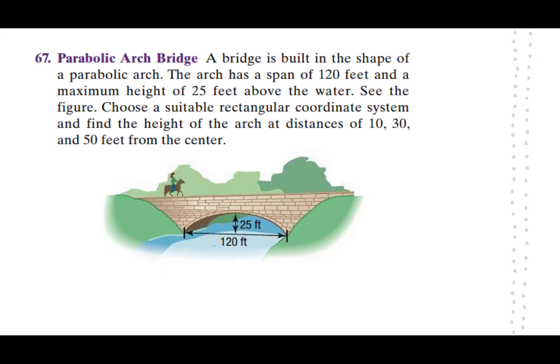Here's the long problem. I'm pretty sure I didn't give you this in the homework, but I have a plan to make this a quiz instead. That way you could show me some work and do some stuff on Desmos. So it says a bridge is built in the shape of a parabolic arch. The arch has a span of 120 feet and a maximum height of 25 feet above the water. See the figure. Choose a suitable rectangular coordinate system and find the height of the arch at a distance of 10, 30, and 50 feet from the center.